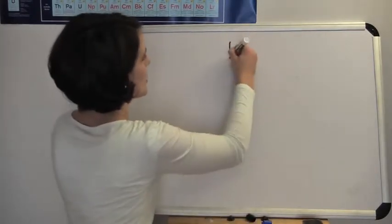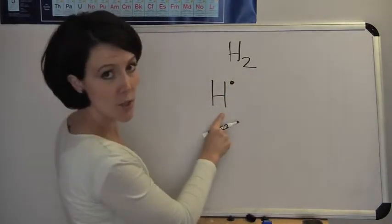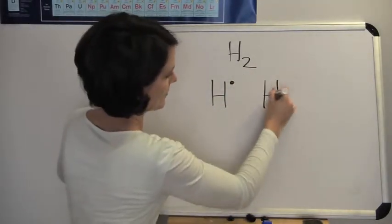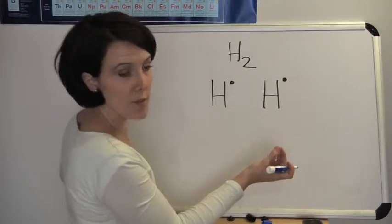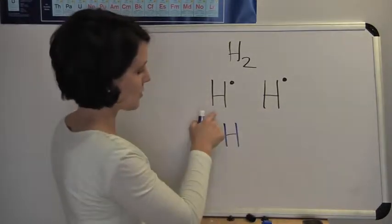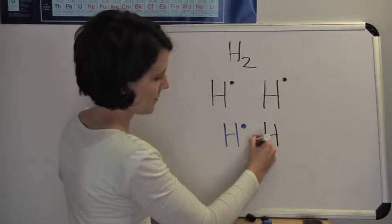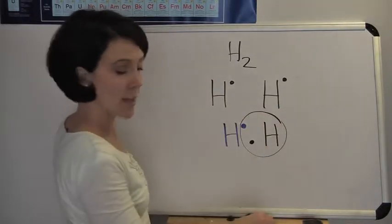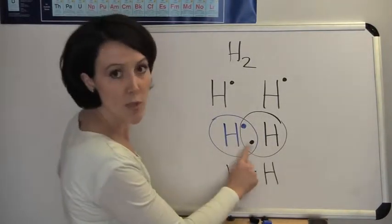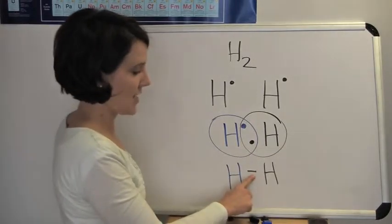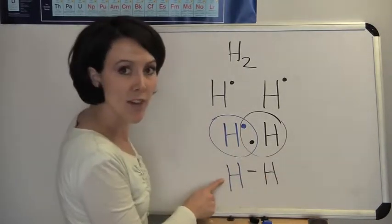Let's start with hydrogen. Hydrogen is H2, meaning there are two hydrogens involved. The individual Lewis symbol for hydrogen is one dot, and there are two of them. The electrons will be in between them, forming the covalent bond. Each hydrogen has two electrons, so they're both stable. We can simplify the Lewis dot structure by drawing a line to represent the bond, since a line represents two electrons in a bond.